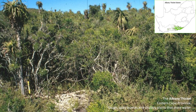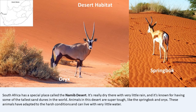The Albany Thicket is found in the Eastern Cape. It's filled with tough, spiky bushes and chubby plants that store water, creating a home for unique birds and small animals. South Africa also has the Namib Desert — it's really dry with very little rain and is known for having some of the tallest sand dunes in the world. The plants and animals there are super tough, like the springbok and oryx, which have adapted to the harsh conditions and can live with very little water.